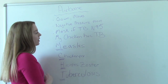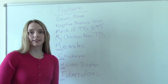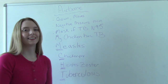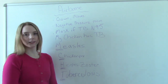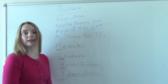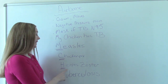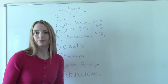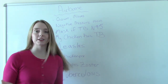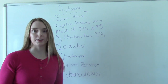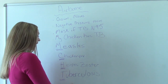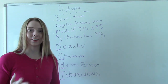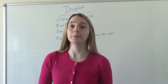The way we can remember what requires airborne isolation precautions is: my chicken has tuberculosis. M is for measles, C is for chicken pox, H is for herpes zoster — which is basically shingles, so a patient with shingles will likely be on airborne isolation. And T is for tuberculosis, of course — the big scary one we don't want to have.